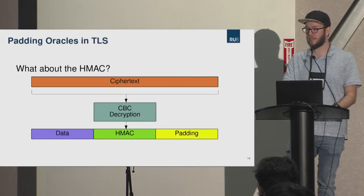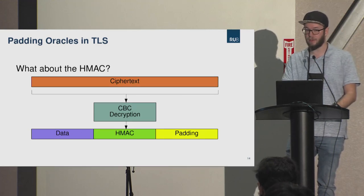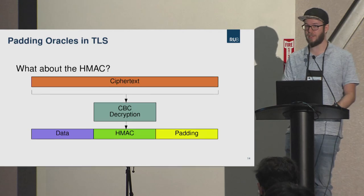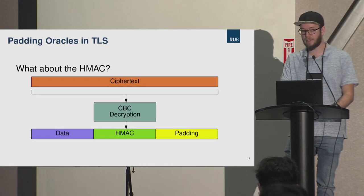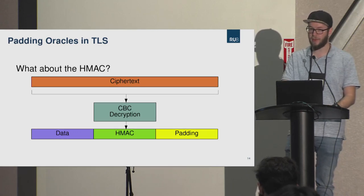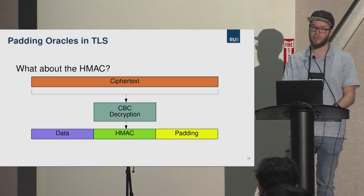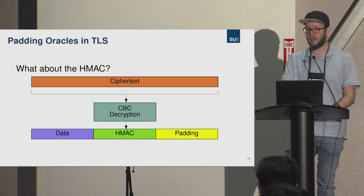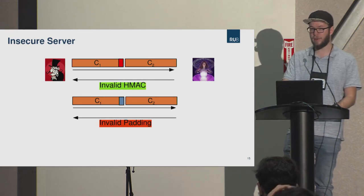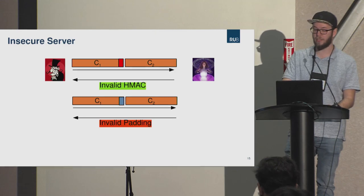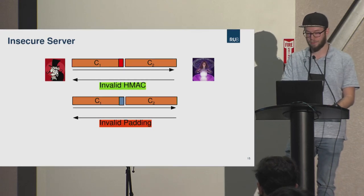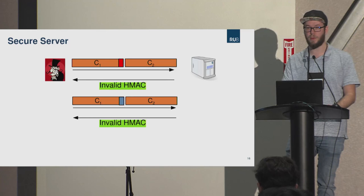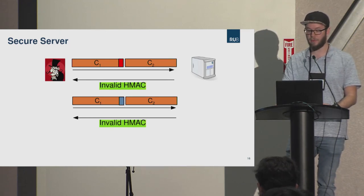Why is this applicable in TLS? TLS has an HMAC, so you'd think manipulating the ciphertext invalidates the HMAC. But usually you cannot tell if the HMAC is valid before you've checked the padding, because the HMAC is at an arbitrary position in the plaintext and you must check the padding first to locate it. So a vulnerable TLS server leaks not valid/invalid padding, but rather 'invalid HMAC' versus 'invalid padding' — an attacker can still deduce whether padding was valid. A secure server should always respond the same way.